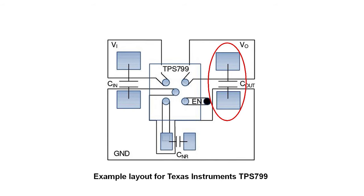A handy trick to avoid this mistake is to print your PCB layout at a one-to-one scale. Then order samples of all the various components — mainly the microchips and connectors — and manually place them on the printed layout. This allows you to very quickly verify that all of the landing patterns are correct. Regardless of where these landing patterns come from — whether a built-in library, a third-party source, or drawn by hand — doing this verification by printing and placing the components is always a smart decision.